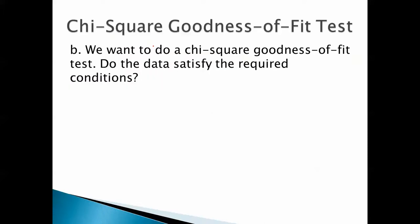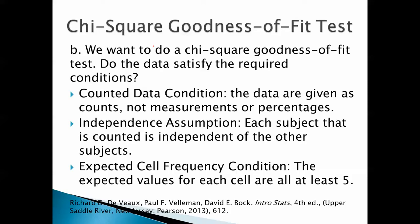We want to do a chi-square goodness-of-fit test. Do the data satisfy the required conditions? Here's the counted data condition. The data are given as counts, not measurements or percentages. So you can't measure feet or pounds or something like that. They have to be counts. Independence assumption: each subject that is counted is independent of the other subjects. Expected cell frequency condition: the expected values for each cell are all at least 5. Yep, we satisfy these, as you'll see.